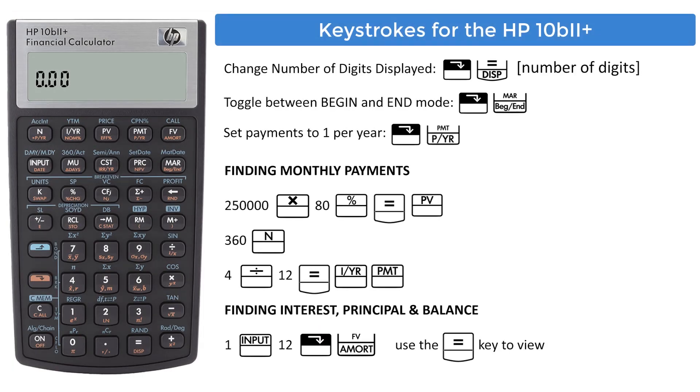Let's look at the keystrokes for the HP-10B2. Number of digits to be displayed can be set to 2 or 4 by pressing the downward shift, DISP-4, or downward shift, DISP-2. Make sure the mode is set to end. If the calculator display has the letters BEG, then press the downward shift key, then the begin-end mode key. To keep things as simple as possible, also set number of payments per period to 1. Enter 1, downward shift, payments per year key.